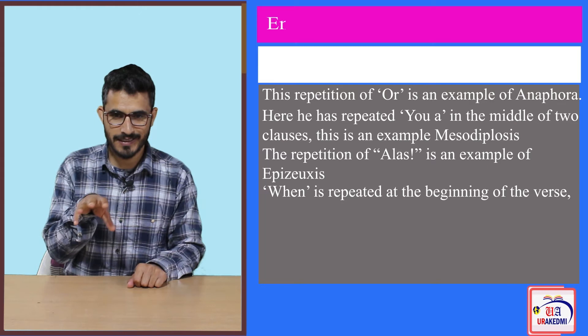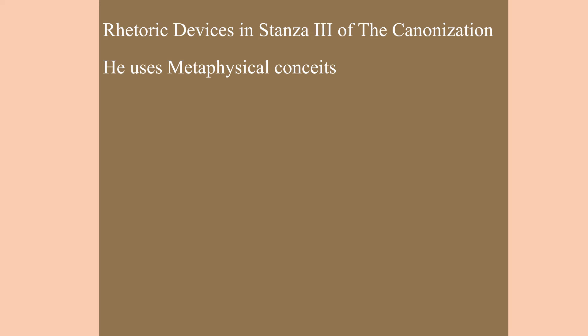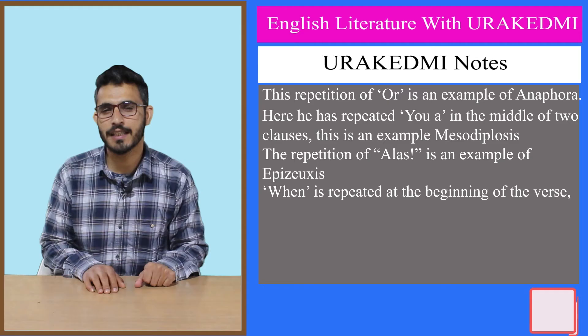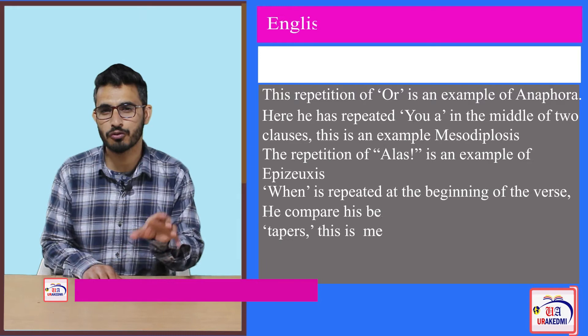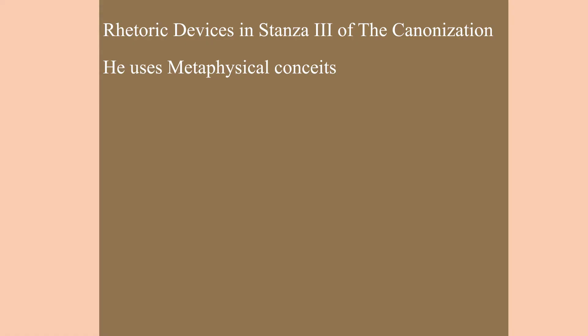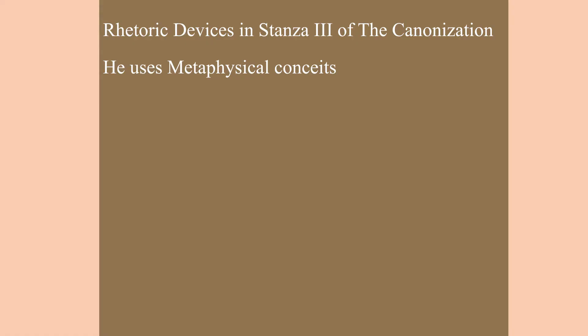Coming to the third stanza, one rhetorical device employed is metaphysical conceit — for example, when he compares himself and his beloved to a fly and tapers. That is an example of metaphysical conceit. Another rhetorical device employed here is conduplicatio.